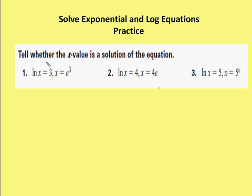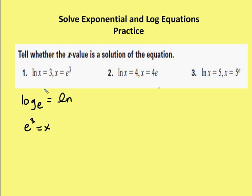First set of problems: tell whether the x value is a solution of the equation. What we want to do is take this particular equation, the first part prior to the comma, rewrite it in exponential form, and determine whether or not the log form and the exponential form match each other. We remember that log with a base of e is the same thing as natural log, written as ln. So if I say natural log of x is equal to 3, if I were to rewrite that in exponential form, it would be e to the third is equal to x. So these two forms match each other.